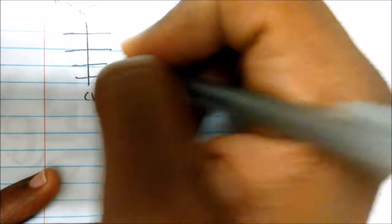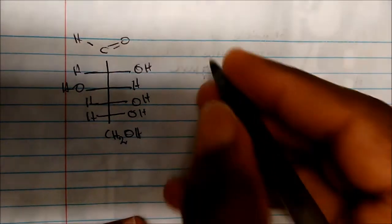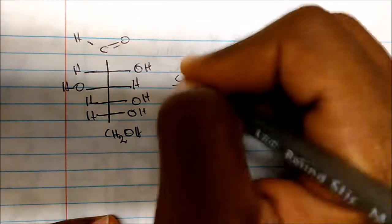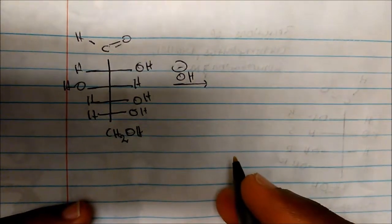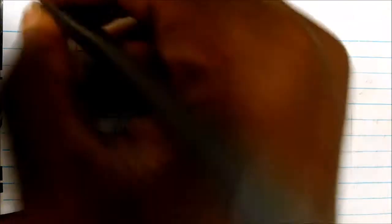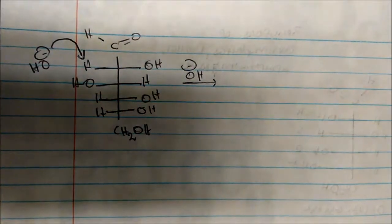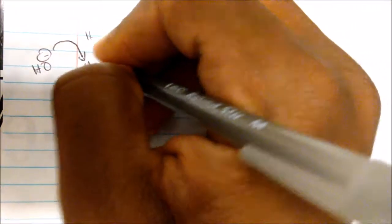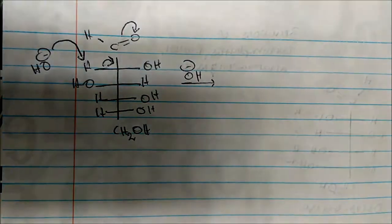If we take D-glucose and add base again, the reaction goes a different pathway. The base (OH⁻) is going to deprotonate the hydrogen. A double bond forms here, and those electrons kick off onto the oxygen, giving us an O⁻ charge. We come to a structure with an O⁻, still our hydrogen, a double bond to one oxygen, and the carbon with the alcohol.